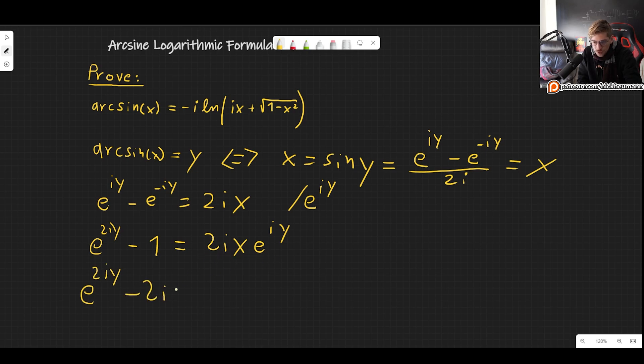So minus 2ix e to the iy. And I put the minus 1 to the other side. I leave some space there and you will see why. So we have this.